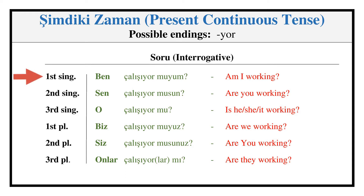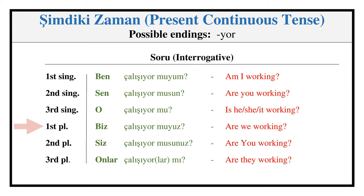Present Continuous — Interrogative: ÇALIŞIYOR MUYUM, ÇALIŞIYOR MUSUN, ÇALIŞIYOR MU, ÇALIŞIYOR MUYUZ, ÇALIŞIYOR MUSUNUZ, ÇALIŞIYORLAR MI?